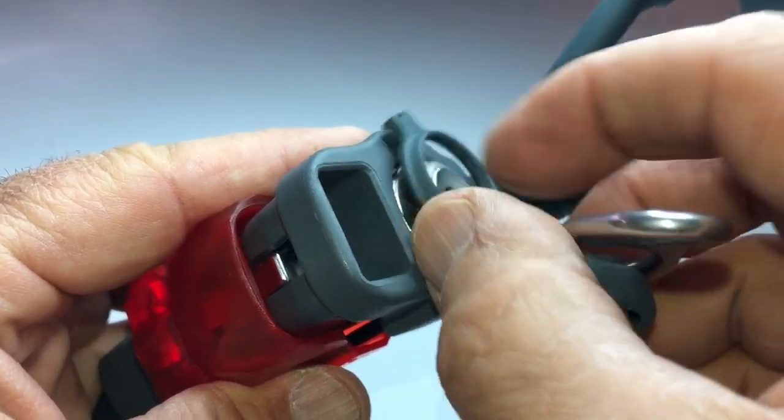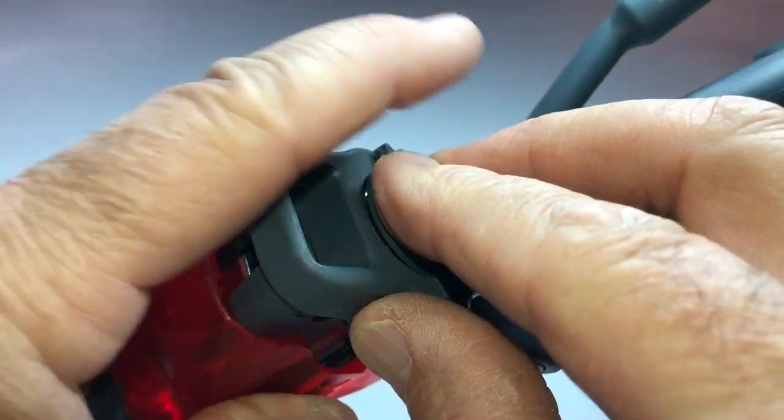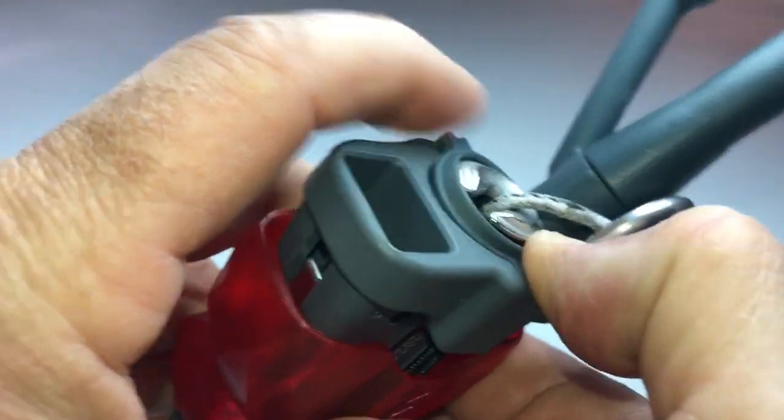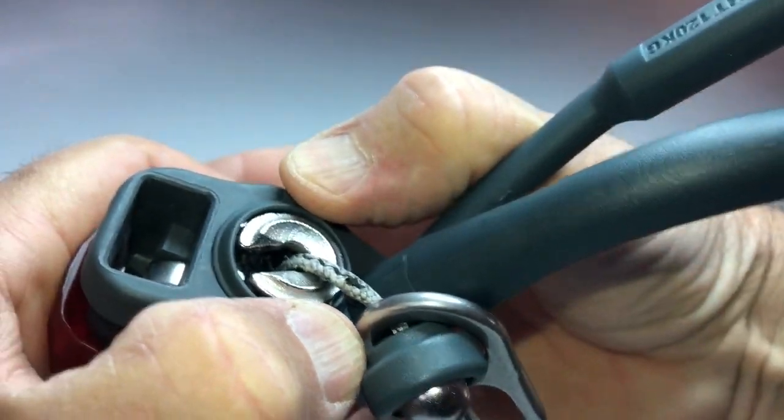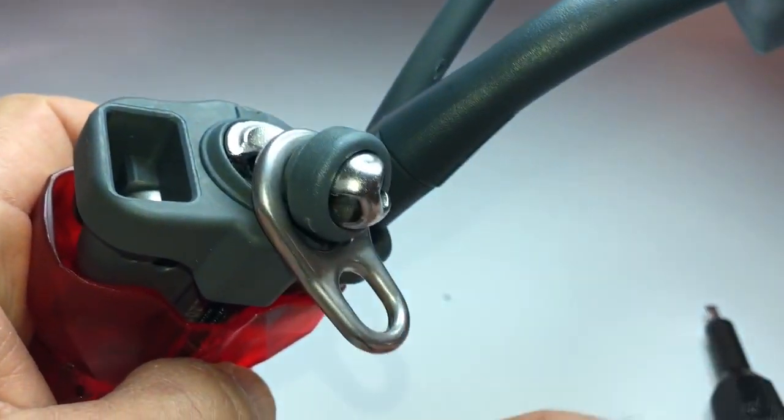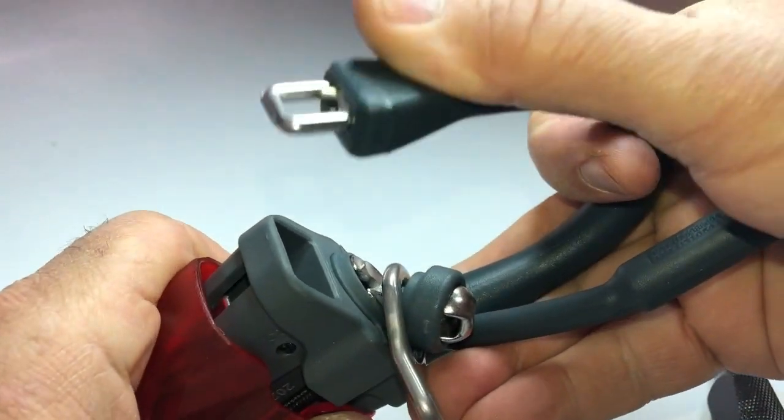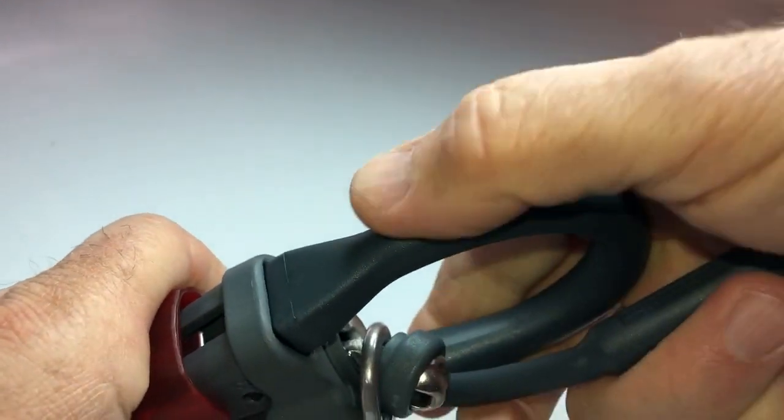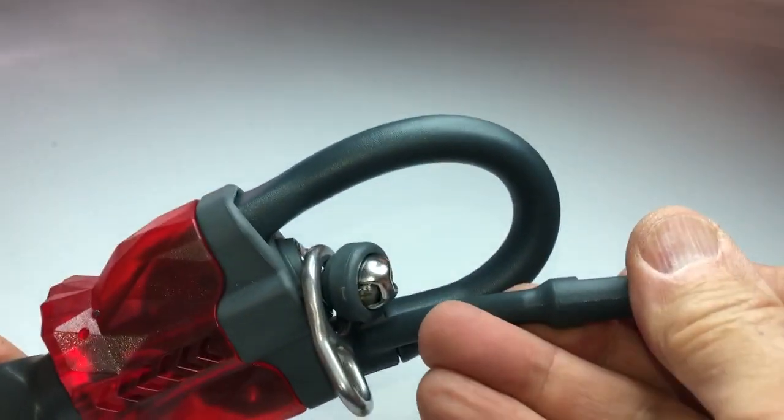If the power line looks suitable to continue using, you can replace the sand cover by pushing it down and locking it in. And then you can reconnect the chicken loop and you're good to go.